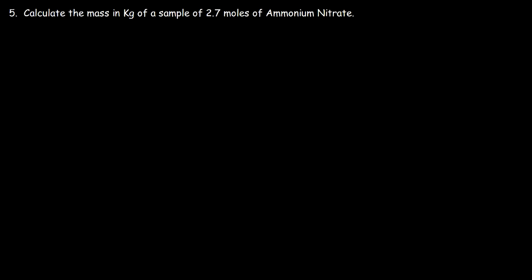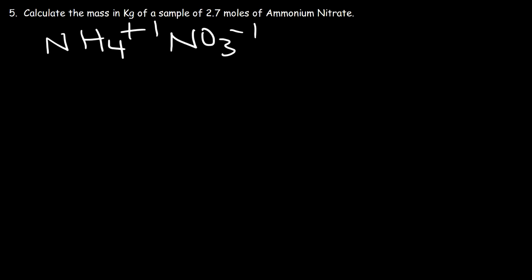This next problem is a little more difficult — there are more steps involved. Calculate the mass in kilograms of a sample of 2.7 moles of ammonium nitrate. The first thing we need to do is find the molar mass, but we don't have the formula for ammonium nitrate. Sometimes you'll be given the name instead of the formula. Ammonium is NH₄⁺ and nitrate is NO₃⁻. Because the charges are both one, you can simply write them together: the formula for ammonium nitrate is NH₄NO₃.